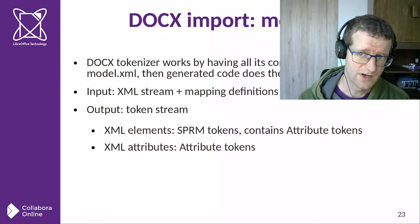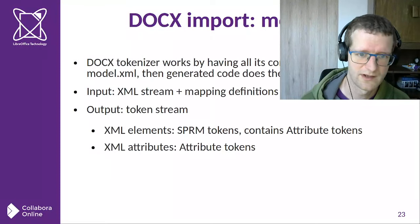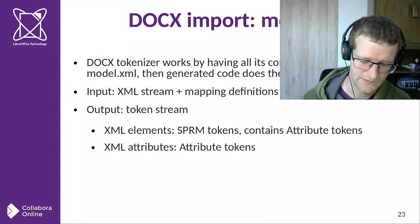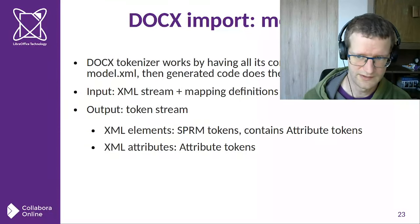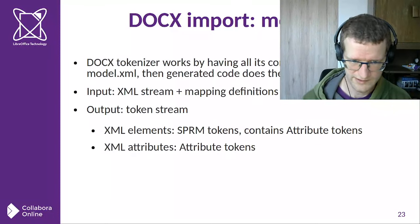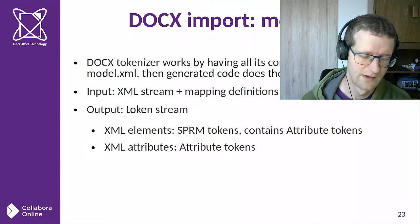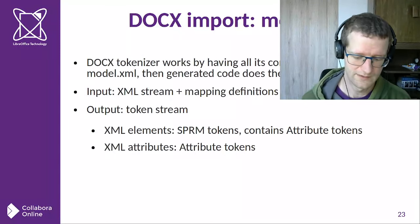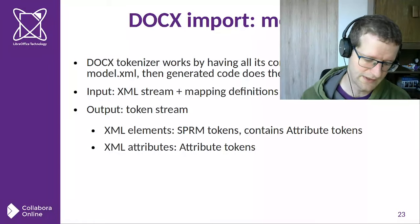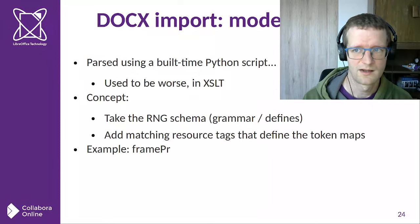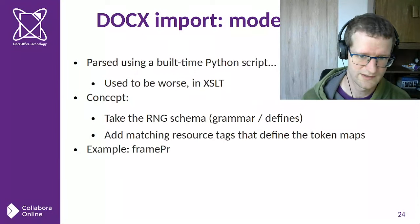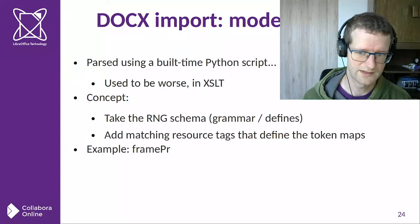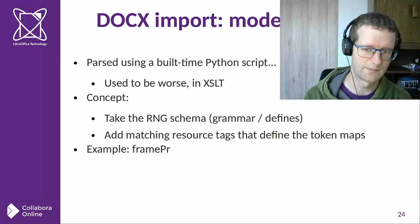For the DOCX import, some code generation happens at build time. There is a model XML file which is the RelaxNG schema from the OOXML spec, and we annotate that with our own information. What we do is take XML elements and attributes and map XML elements to property modifier tokens, which can contain attribute tokens. The RTF import does the same, and then later when we handle tokens we can have shared code between the two formats. Once the OOXML RelaxNG schema is there, we add matching resource XML elements, and that defines how to map these XML elements and attributes to tokens.